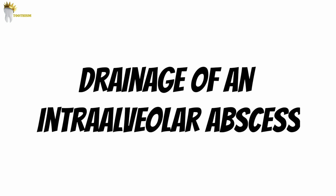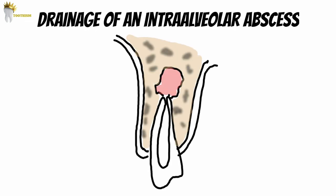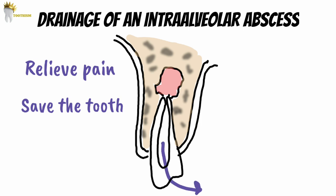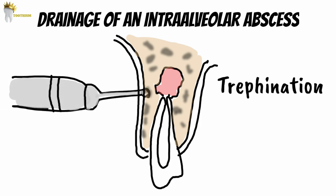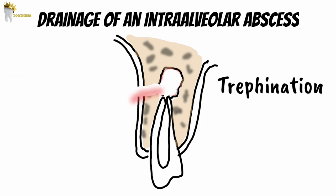Sometimes the abscess could be intra-alveolar, such as at the apical region of the tooth. In this case, the aim is to relieve the patient of pain and to save the tooth. First, drainage is attempted through the root canal. If drainage through the root canal is not possible, treatment consists of trefination or fenestration of the alveolar bone using a round bur at slow speed. Before attempting this, the position of the apex is established with a radiograph. This procedure results in drainage of the exudate and relief of pain. After completion, the wound is sutured. Placement of a rubber drain here is not necessary.